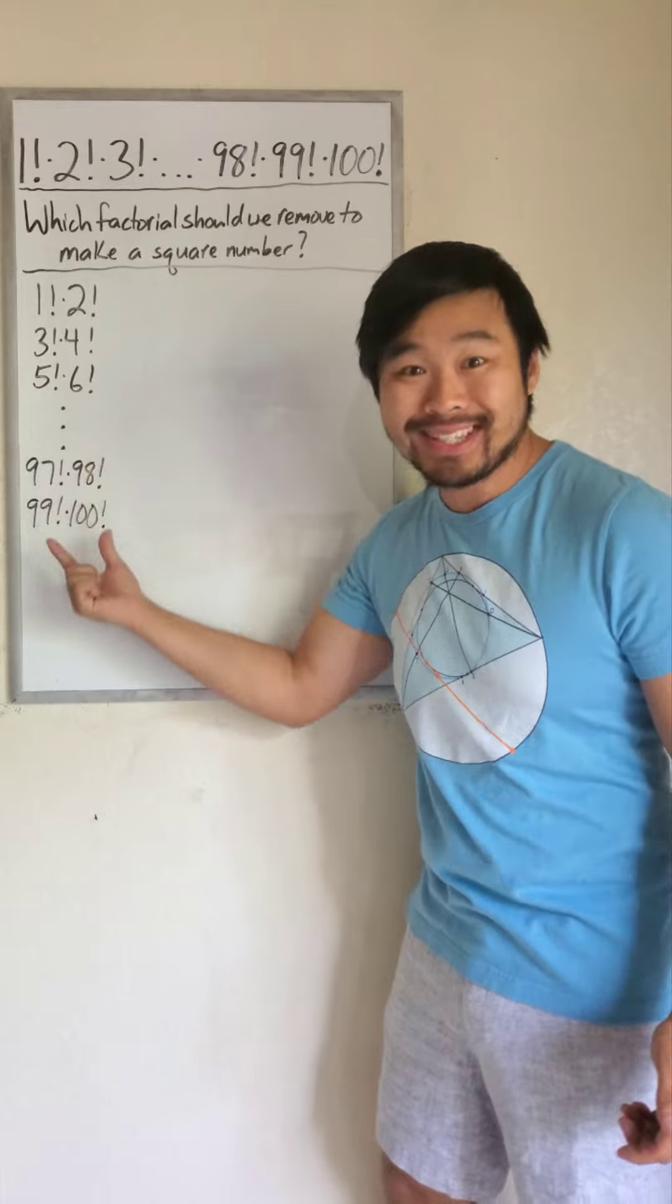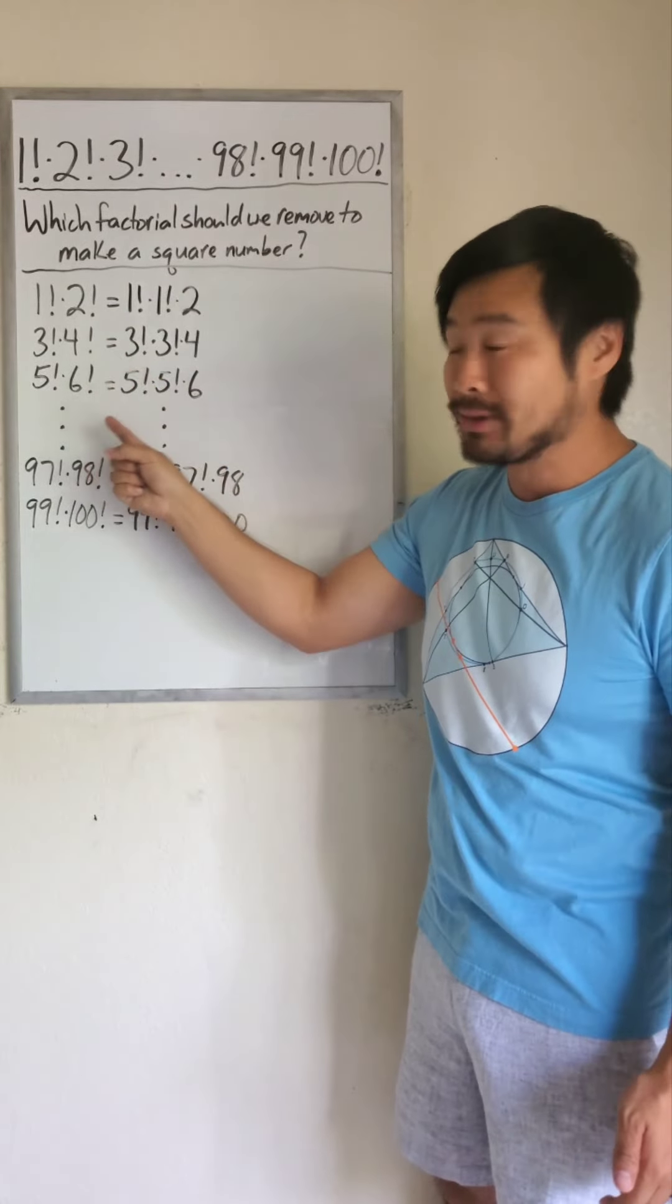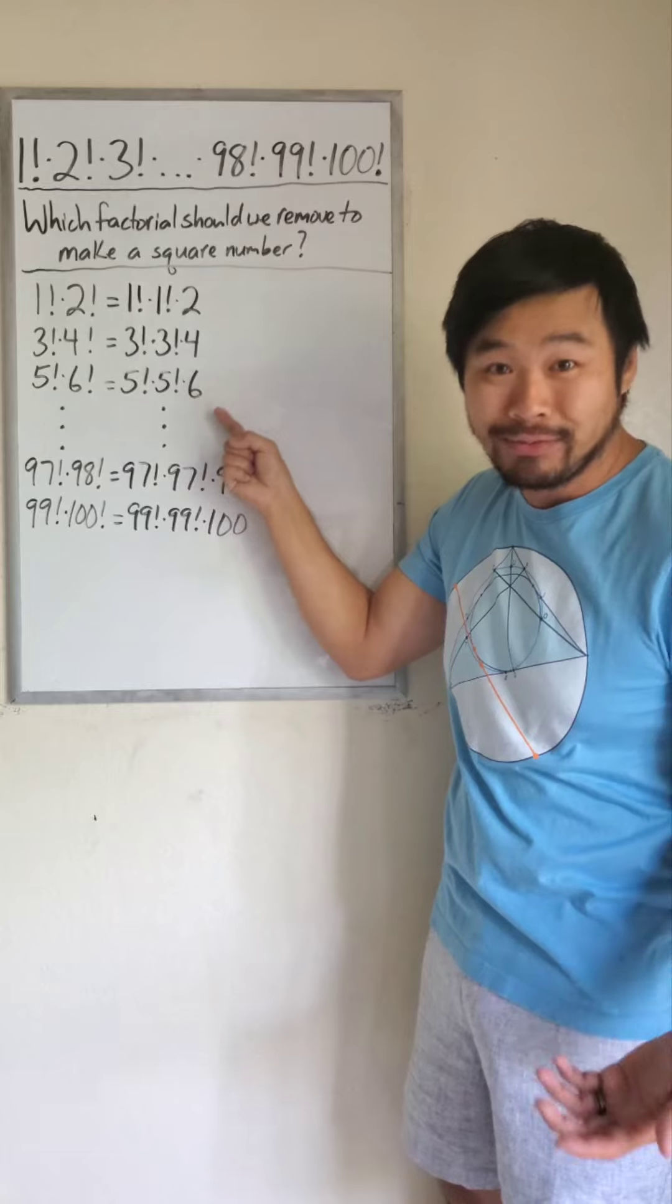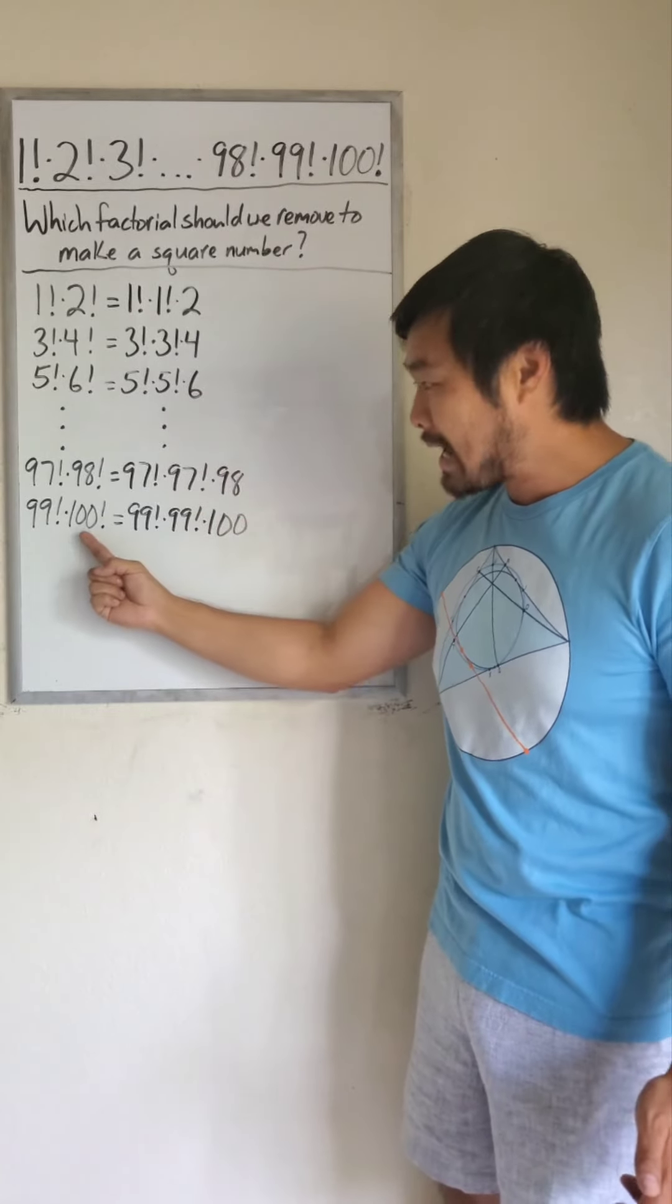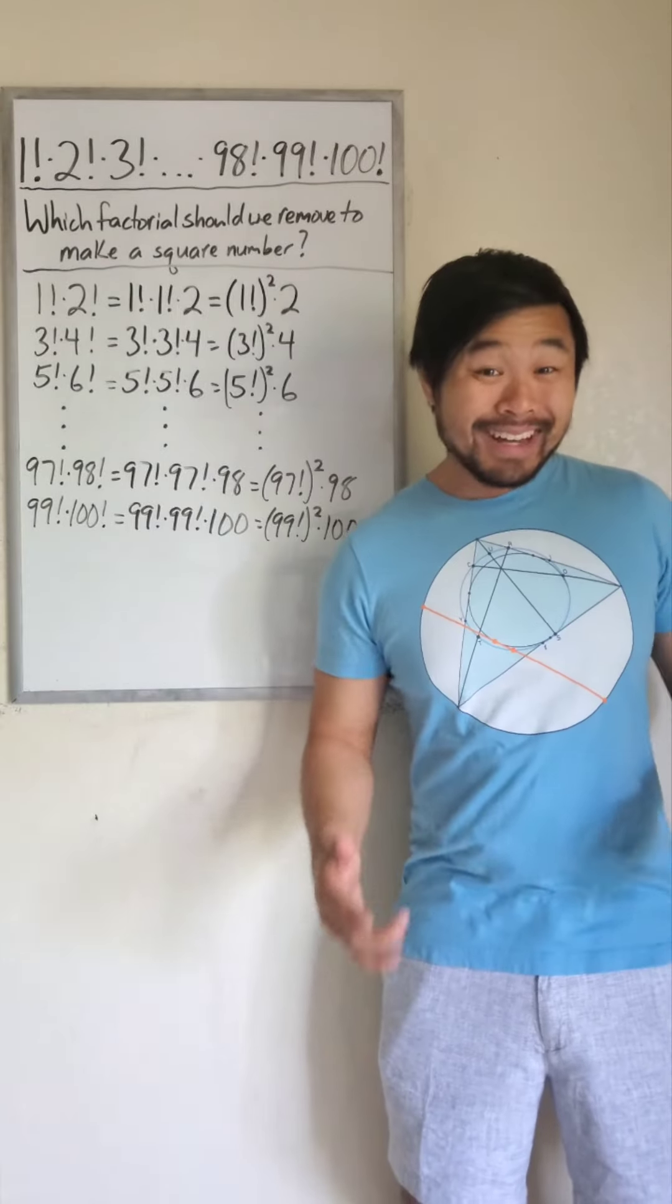First, I'm going to pair up the factorials like this. Then I'm going to rewrite the larger of the two factorials as the smaller factorial times whatever is needed. For example, I can rewrite 100 factorial as 99 factorial times 100.